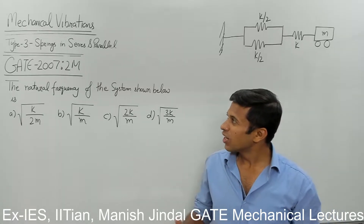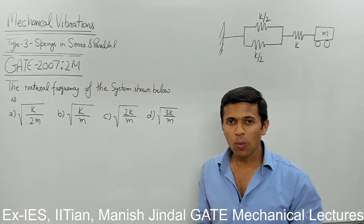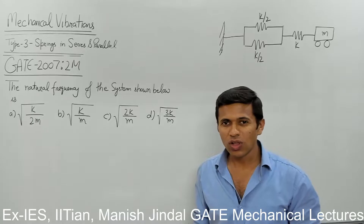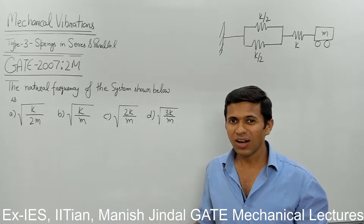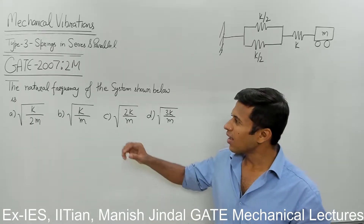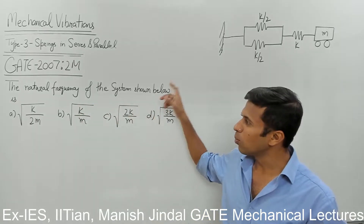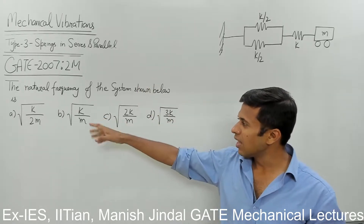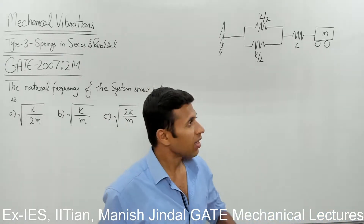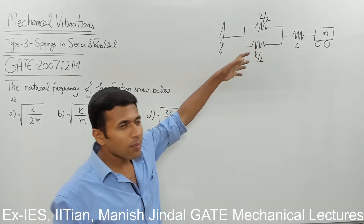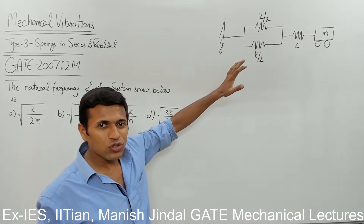So friends, we have a two-mark question. The problem is really very simple — find the natural frequency of the system shown below. This diagram and values are in front of you. This is an easy question.